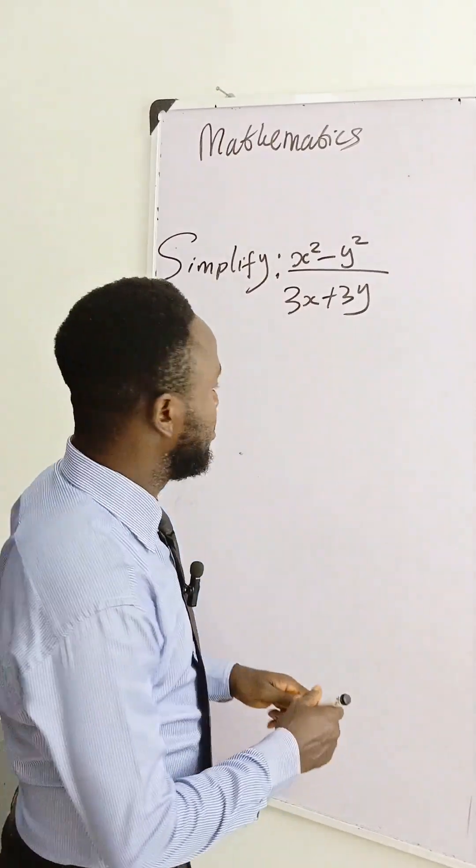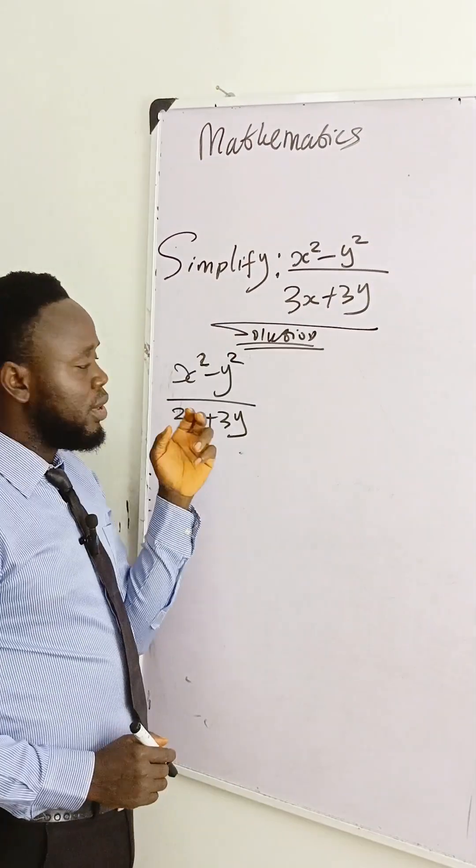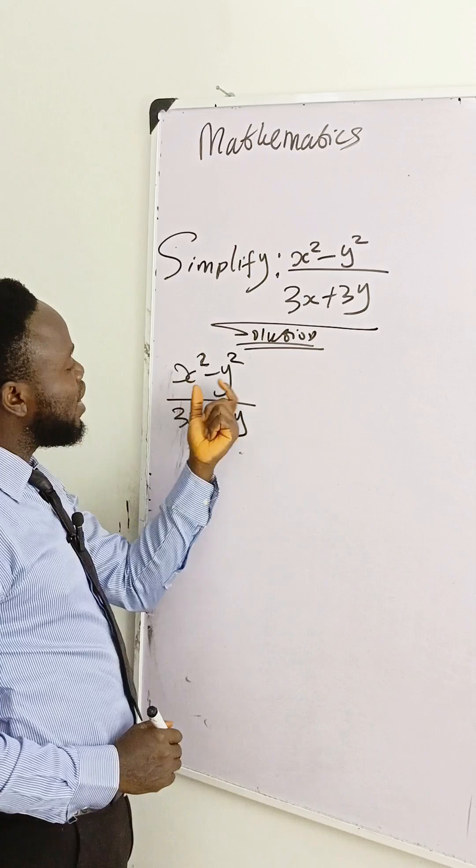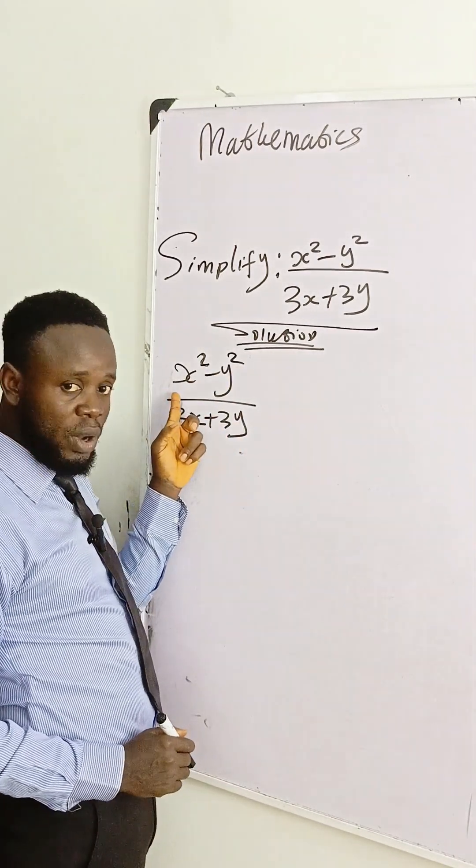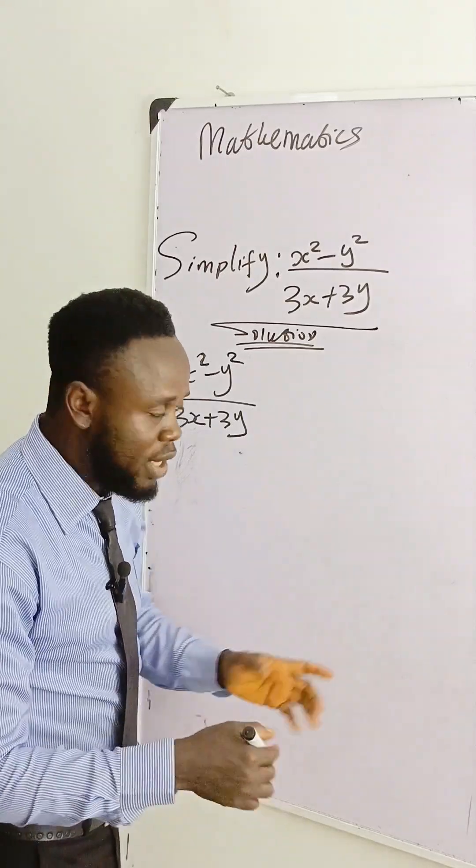We are required to simplify this solution. This is x squared and we are subtracting another thing that has squared from this one that has squared. We call it difference of two squares.